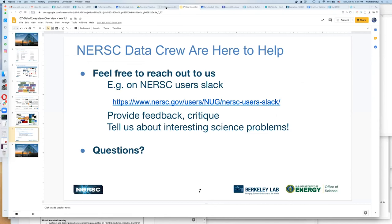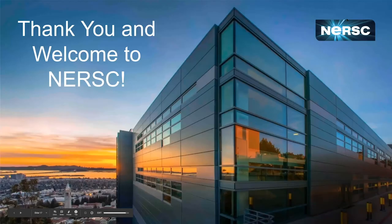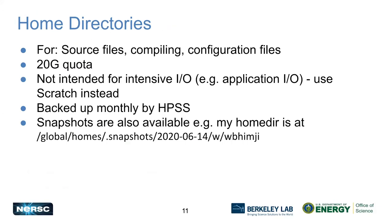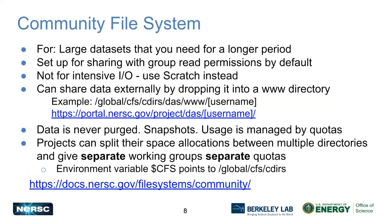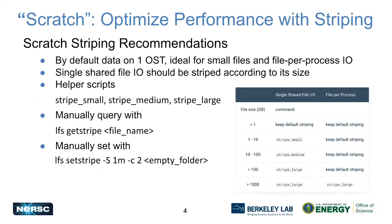Question: Can you define striping again in a general sense? Striping is just spreading the data across multiple servers — in this case, it's individual blocks of the file. A large file can be held on multiple servers by striping it.